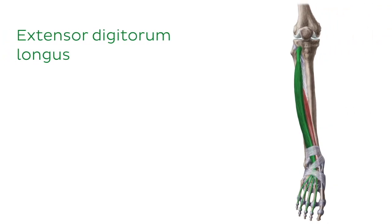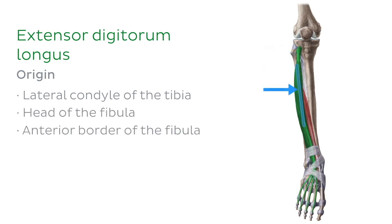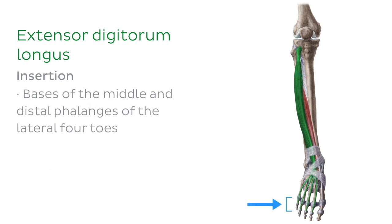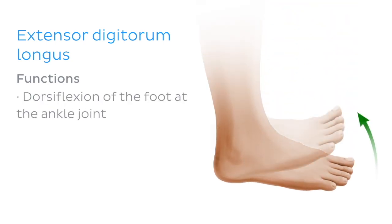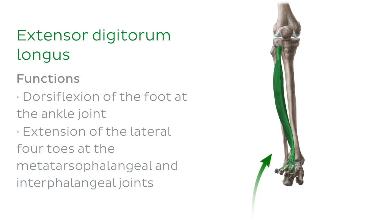Located lateral to the tibialis anterior, we find the extensor digitorum longus. This muscle originates from the lateral condyle of the tibia, the head of the fibula, the anterior border of the fibula, and the interosseous membrane of the leg. It then splits into four tendons and inserts onto the bases of the middle and distal phalanges of the lateral four toes. The extensor digitorum longus is responsible for dorsiflexion of the foot at the ankle joint, and extension of the lateral four toes at the metatarsophalangeal and interphalangeal joints. As we can see, extension of the toes pulls them towards the leg, decreasing the angle between the toes and the leg.